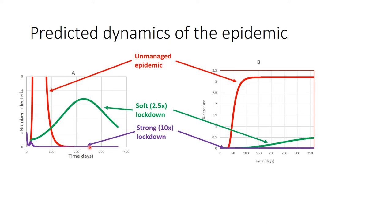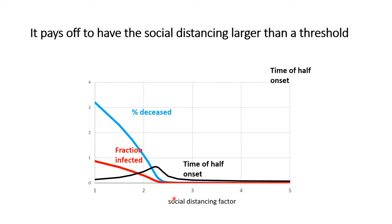Looking at the social distancing factor in more detail: a strong lockdown assumes a factor of 10, no government action gives a factor of 1, and the simulated soft lockdown uses two and a half. With a factor of two and a half, the percentage deceased is already low; with no lockdown it would be three percent; and with a strong lockdown it is very low.